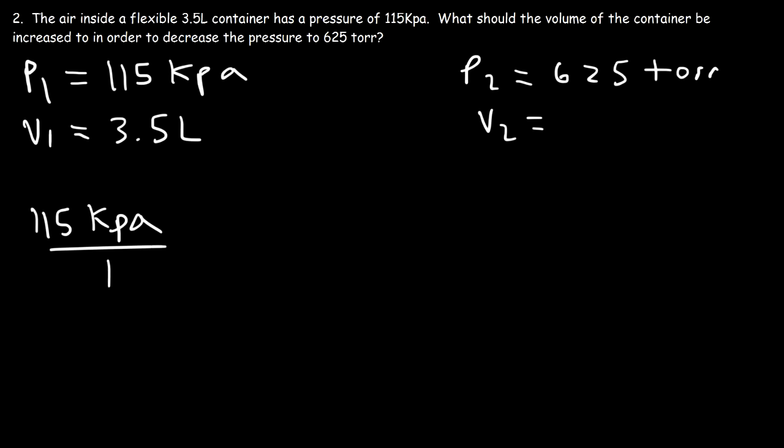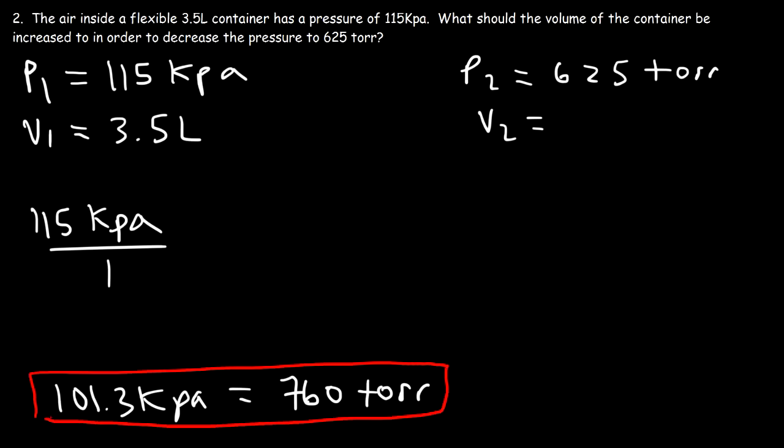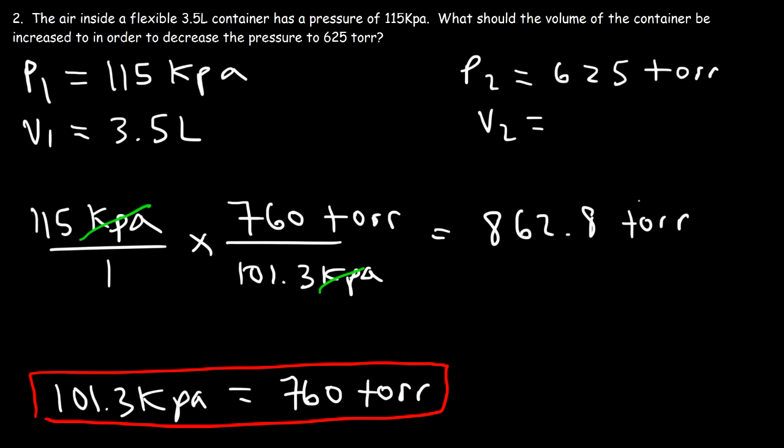So we need to know the conversion between kPa and torr. 101.3 kPa is equal to 1 atmosphere, which in turn is equal to 760 torr. So this is the conversion factor that we need. So I'm going to put 101.3 kPa on the bottom in order that the units kPa will cancel. And so I'm going to put 760 torr on top. So it's 115 times 760 divided by 101.3. So this is equal to 862.8 torr. So that's P1. So I'm just going to write that here.